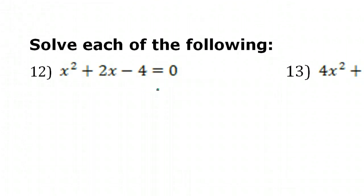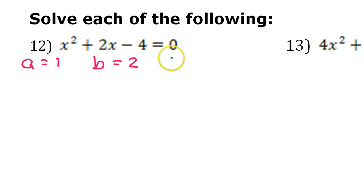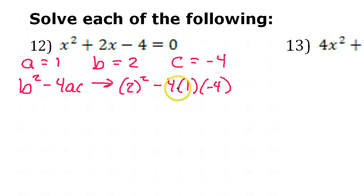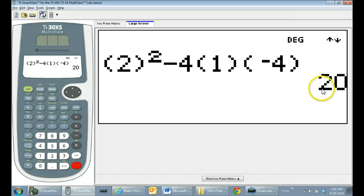For the rest of these, we're going to actually solve — not just finding the discriminant, we're going to go ahead and solve all the way. But the first step will still be to find the discriminant. So for number 12, we have a is 1, b is 2, and c is negative 4. Let's find the discriminant first: b squared minus 4ac becomes 2 squared minus 4 times 1 times negative 4. The discriminant is 20.